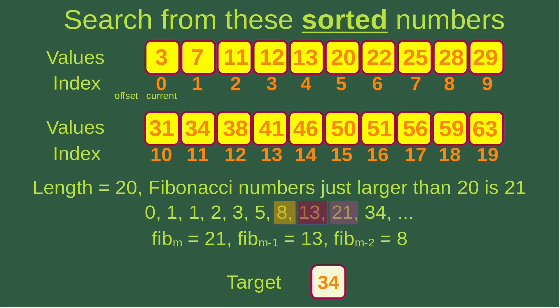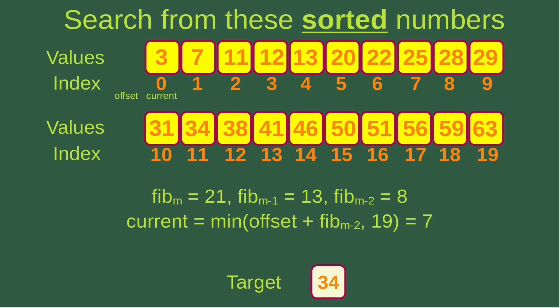The length of the array is 20, and the Fibonacci number just larger than 20 is 21. So Fibonacci M is 21, Fibonacci M minus 1 is 13, and Fibonacci M minus 2 is 8. Putting these into the current index calculation: offset is minus 1 and Fibonacci M minus 2 is 8, so offset plus Fibonacci M minus 2 is 7. Comparing 7 and 19, 7 is smaller, so the current index becomes 7.